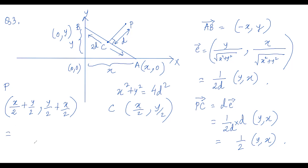From the coordinates of P, which are ((x+y)/2, (x+y)/2), the point P lies on the line y = x. However, it does not cover the whole line y = x — only a part of it. So we need to find the minimum and maximum values.